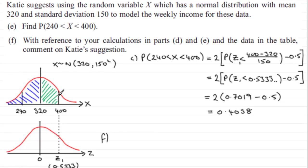If that's the case, I would think that her suggestion sounds quite reasonable, because we've worked out our probability around the mean 320. We've also seen in part D that it was slightly positive skew.